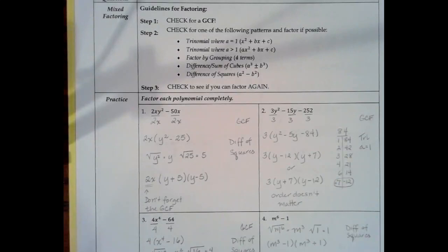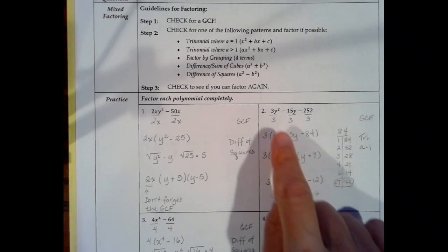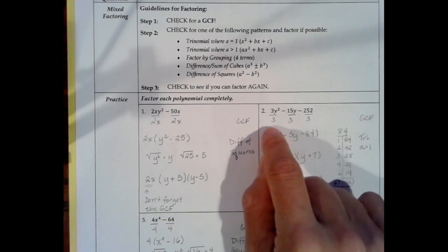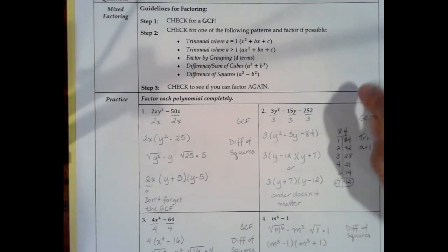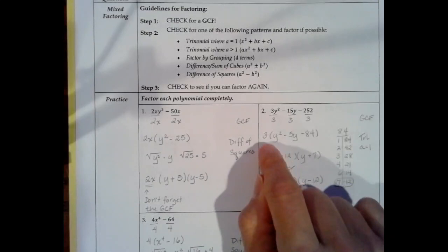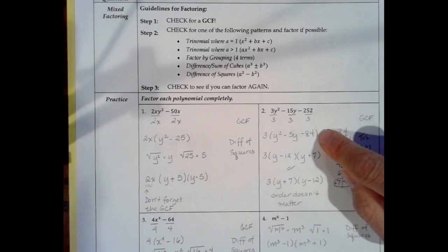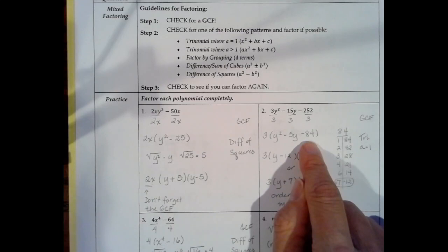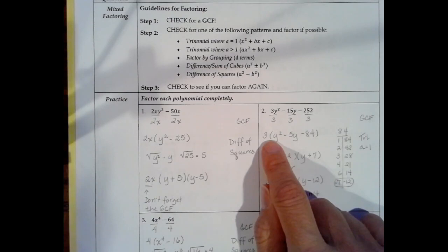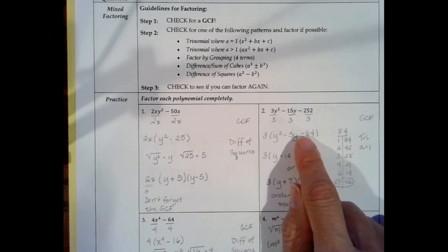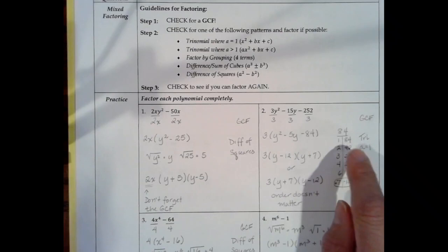The next example is 3y² minus 15y minus 252. The first thing I'm going to do is check for a greatest common factor. We want to pick the smallest number and check if it divides into all three terms. The smallest number is 3, and 3 happens to go into each of these terms. So let's factor out a 3. This last term doesn't have a y, so we can't factor out a variable. The negative sign means our factors will have opposite signs, with the bigger number being negative.